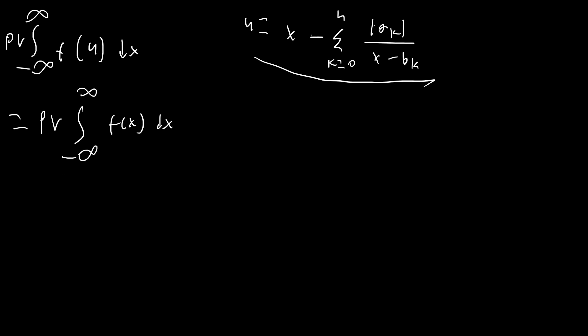Basically what this means is we can replace this function — which is x minus some reciprocals of x — with just x when we have an integral like this. For example, you can have minus 2 over x minus 3, minus 4 over x minus e squared pi. It doesn't matter what we're subtracting or adding to x as long as this number is positive, we're always subtracting these, and x is on the bottom. I'm not going to go through a whole proof but I will show some ways you can see how it works.